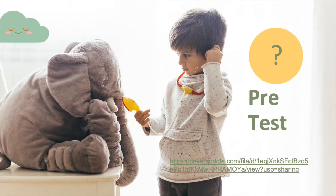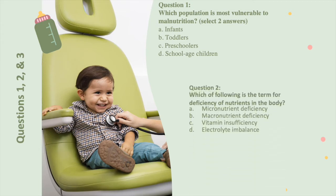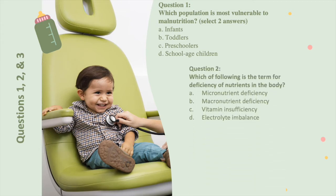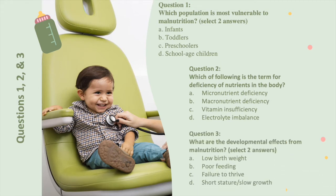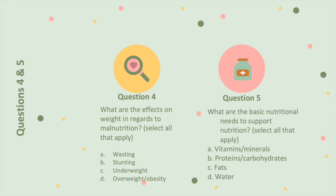We will begin with a pre-test which can be found at the link shared here. Question 1: Which population is most vulnerable to malnutrition? Question 2: Which of the following is the term for deficiency of nutrients in the body? Question 3: What are the developmental effects from malnutrition? Question 4: What are the effects on weight in regards to malnutrition? Question 5: What are the basic nutritional needs to support nutrition?